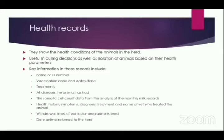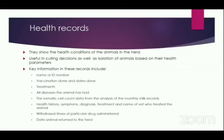Production records also inform the farmer what type of feeds and feeding strategy to follow, for which cow and at what level. Individual cow production records are combined to give total herd performance. We also have health records — we want to know if our farm is healthy or not. Unhealthy farms will always cost us money and time; health records are very crucial. They show the health conditions of the animals in the herd and are useful in culling decisions.